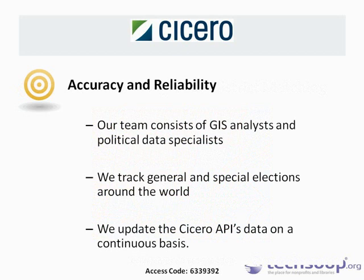A second differentiator is accuracy and reliability. We are a geospatial software design company. Cicero is actually an unusual project for us — we don't often create or manage our own data. The Cicero API was born from gathering legislative data for many of our elections projects. We have a team of spatial analysts, GIS analysts, and political data specialists in-house, and that team continues to grow. They are continually updating the database with new information. We track general and special elections around the world, add new information, and update elected officials based on those elections. We have a dedicated team for the Cicero API and the data structure behind it.